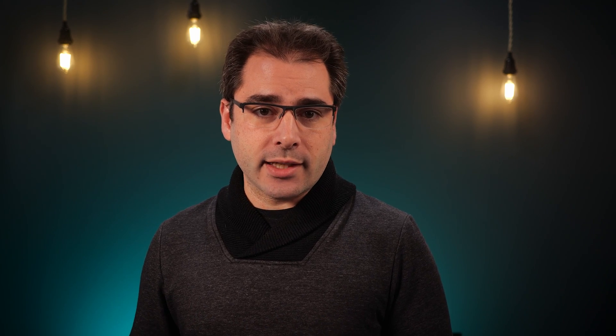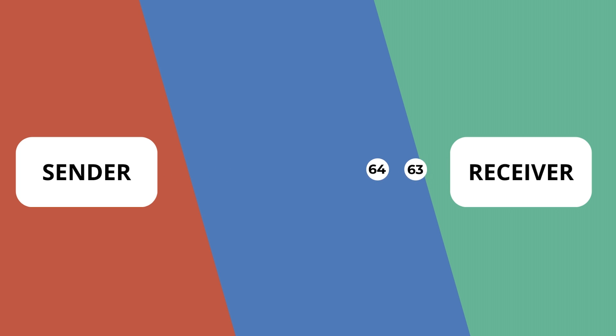SRT takes the fire-and-forget UDP protocol and adds video-specific logic for handling retries, giving back the reliability that TCP provided. Instead of the receiver sending an ACK for every single packet received, it sends back an ACK periodically — for example, saying it's received all packets up to number 64. This already reduces a ton of network traffic: instead of send packet one, get ACK, send two, get ACK, it's send packets one through 64 and get back one ACK. The receiver can also send a NACK packet indicating a gap in the sequence.